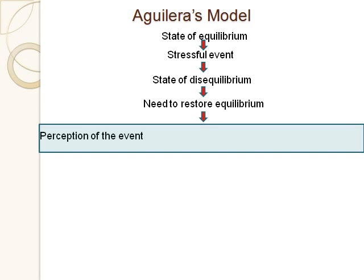Think about all the stuff you've learned about cognitive psychology. The main point is that the way people think about a stressful event plays a significant role in the emotional impact that event will have and in what their behavioral response to the problem will be. So perception of the event is one of the big balancing factors.